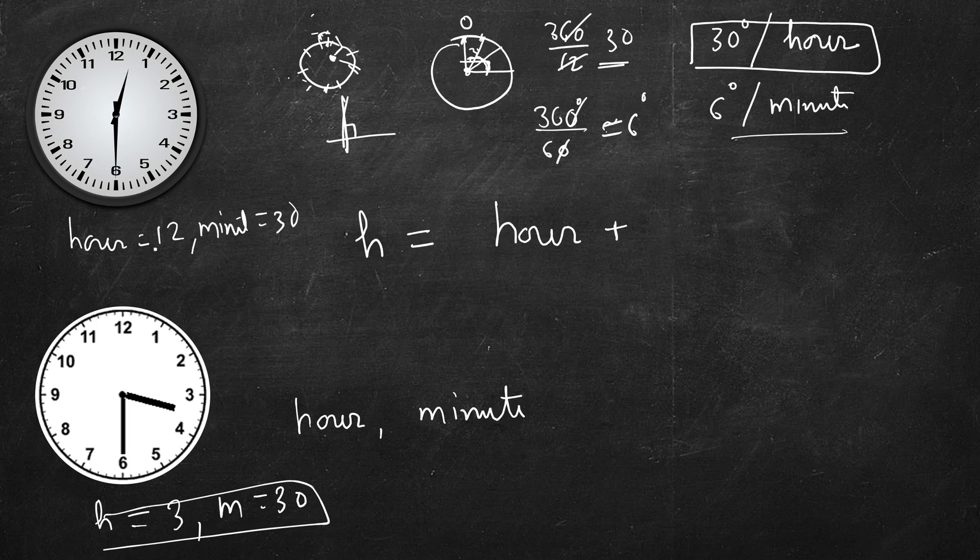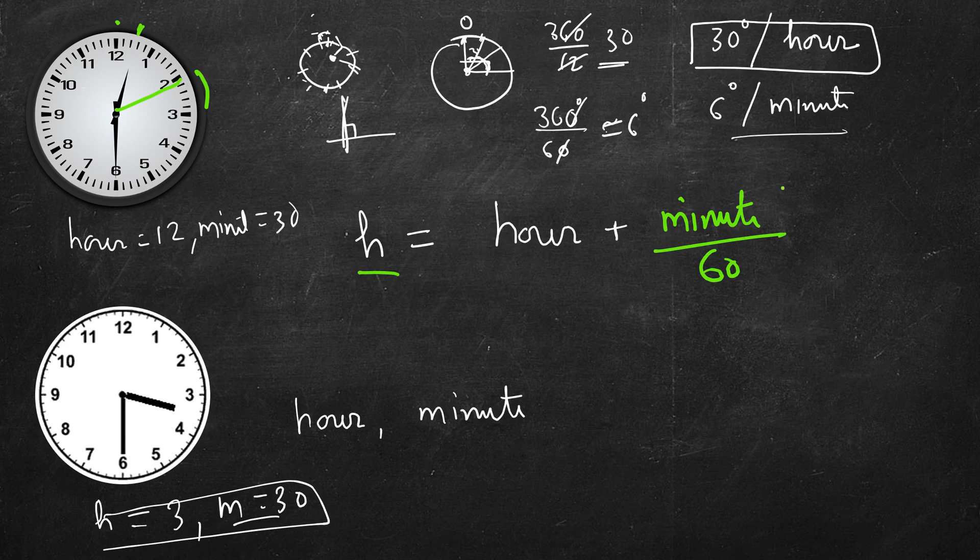So when the minute is not 0, if minute is 0, the hour handle will be exactly on one of these numbers. But if minute is not 0, then it will increase to the next value of hour appropriately, based on what is the minute. In this case, it's 30. So it's exactly half hour. So it's exactly between 12 and 1. So what is total hour? Hour is hour plus minute divided by 60. So this is the total hour.